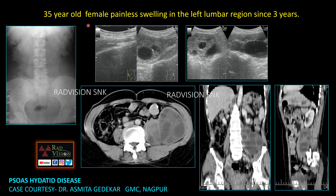Next case: a 35-year-old female with painless swelling in the left lumbar region for 3 years. On the erect abdomen radiograph, the right psoas shadow is clearly seen but the left psoas shadow is not seen. On CT, the normal right psoas muscle is seen but there is a cystic lesion with multiple daughter cysts noted within the left psoas muscle. This is a case of hydatid cyst in the left psoas muscle. Thanks to Dr. Asmita Gadekar for contributing this case.